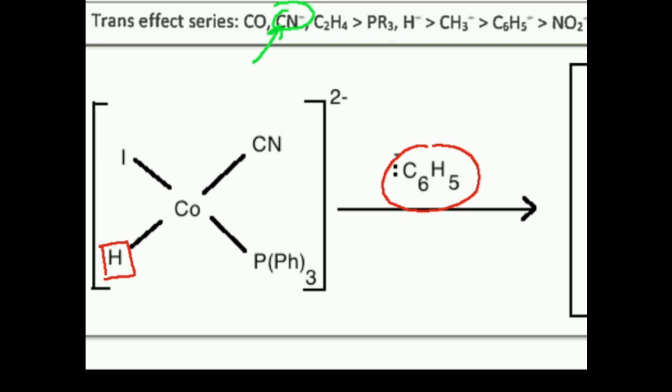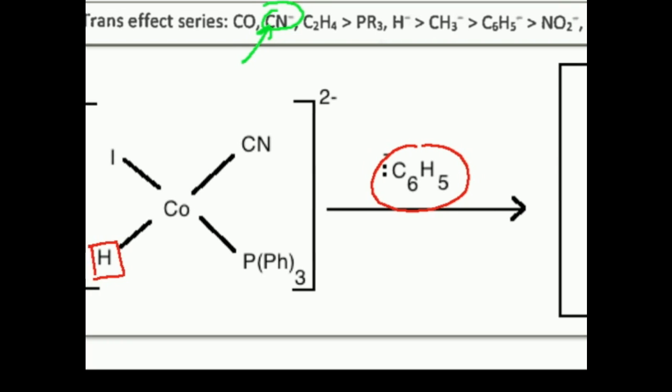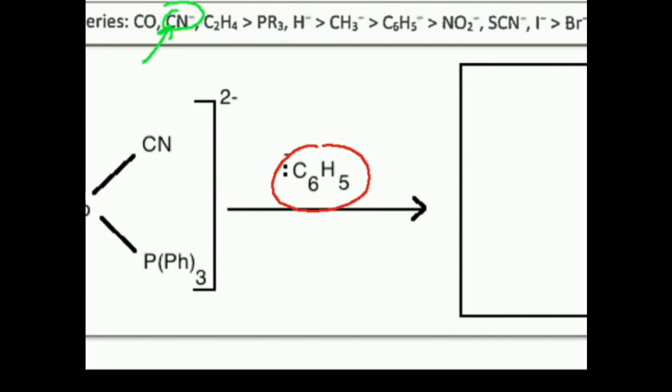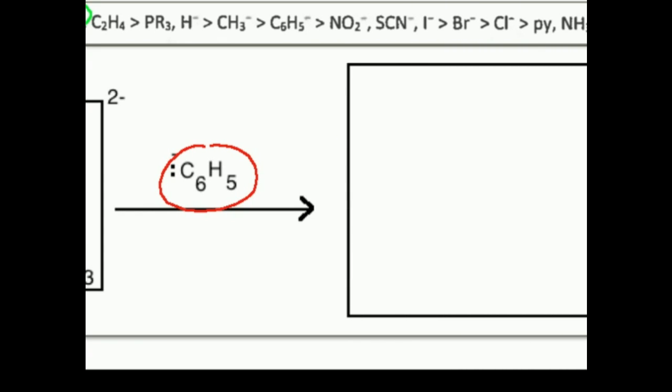So when I draw the product, all I'm going to do is this: cobalt, iodide, CN, triphenylphosphine.